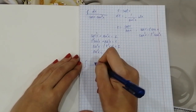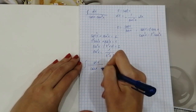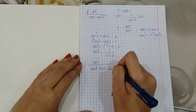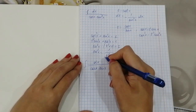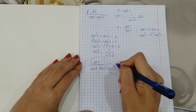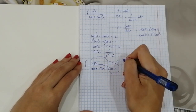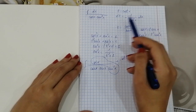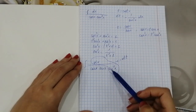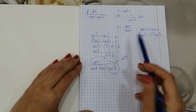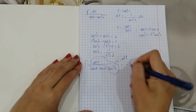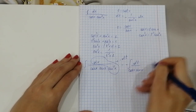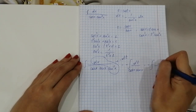Now let's write the integral again: dx over cosine x times sine cubed x. We write sine cubed x as sine x times sine squared x. The dx over sine squared x part equals negative dt, because dt equals negative 1 over sine squared x times dx, so negative dt equals 1 over sine squared x times dx. This gives us negative dt over cosine x times sine x.